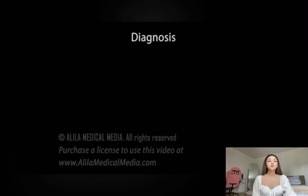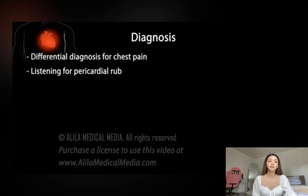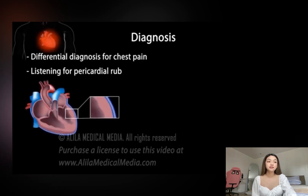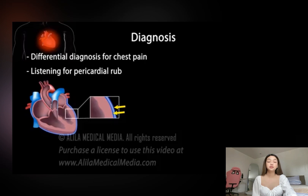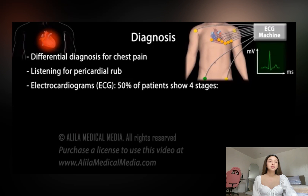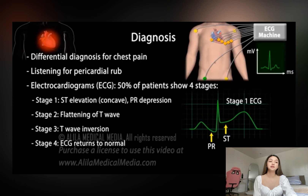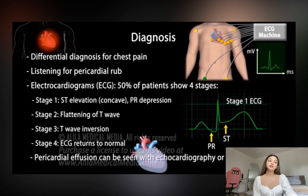Diagnosis can usually be made based on evaluation of chest pain and the presence of a pericardial rub — a characteristic sound produced when pericardial layers rub against each other — but tests are commonly performed to confirm and exclude heart attack. In about half of patients, an electrocardiogram shows changes that go through a characteristic sequence of four stages. Pericardial effusion, if present, can be seen with echocardiography or chest x-ray.